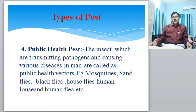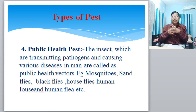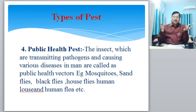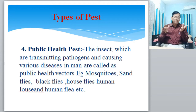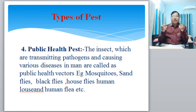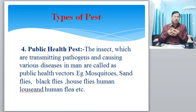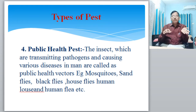The fourth type is the public health pest. In Marathi it is called Sarvajanik Aarogya. The insects which transmit pathogens and cause various diseases in humans are called public health pests. They are also called vectors. Vectors are those insects which transmit disease from one organism to another organism.